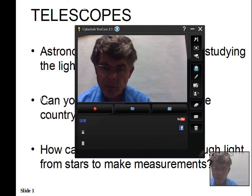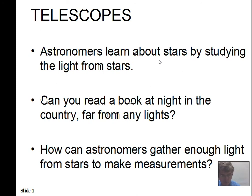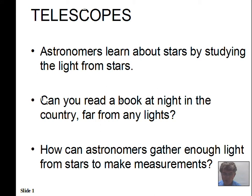It's time to discuss telescopes and how astronomers gather light, which is so important to study. You can't go to stars or galaxies — we can barely go to the planets — so we gather light to learn about these objects. Stars don't deliver much light to Earth, and starlight alone is not bright. We need to gather light with instruments because our eyes don't let enough light in for good viewing.